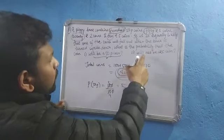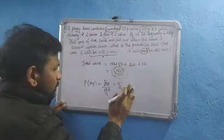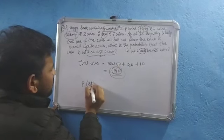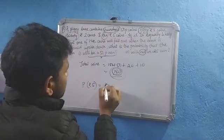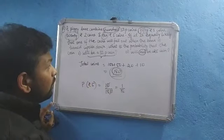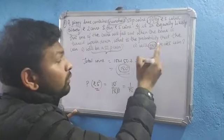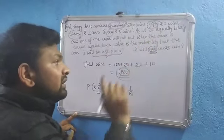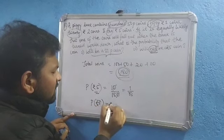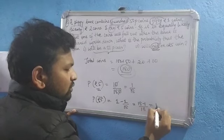Now, what is the probability that the coin will not be a 5-rupee coin? First, the probability of getting a 5-rupee coin: there are 10 five-rupee coins, so 10 divided by 180 equals 1 by 18. But the question asks for the probability that the coin will not be a 5-rupee coin. So: 1 minus 1 by 18 equals 17 by 18.